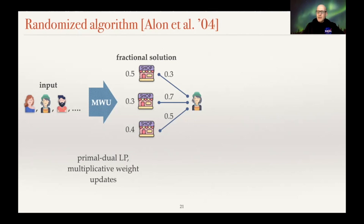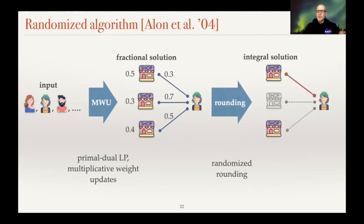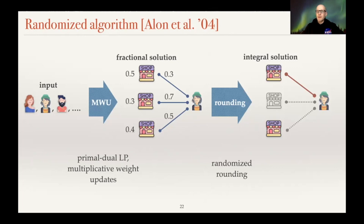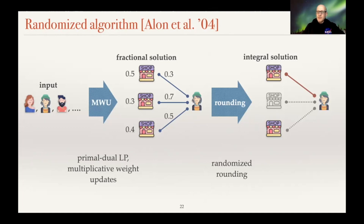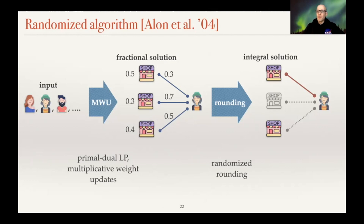After building the fractional solution, you pass it in an online manner to the rounding box. This rounding process works as follows: if some fraction exceeds a given threshold chosen randomly, you round it up and buy the corresponding facility or connection. I want to emphasize that this rounding proceeds in online manner — it is a pipeline from the fractional solution to the integral solution, reacting to increases in fractions. It can only buy additional facilities and connections; it cannot revoke past actions.